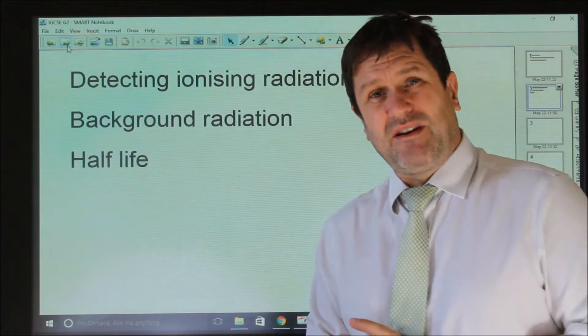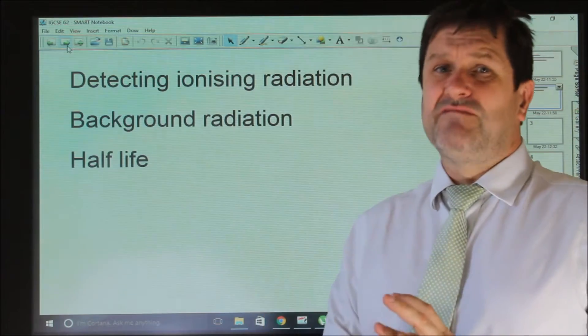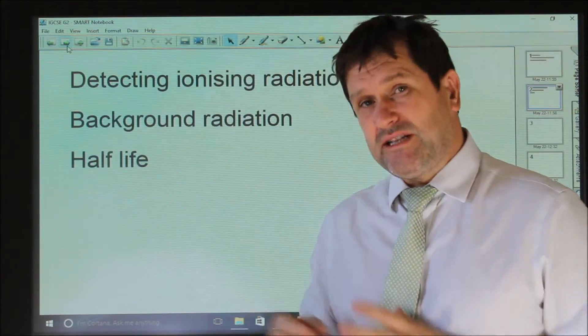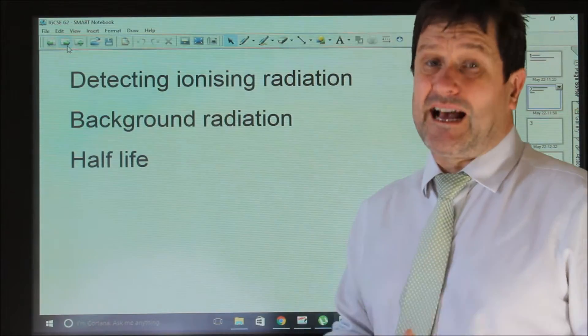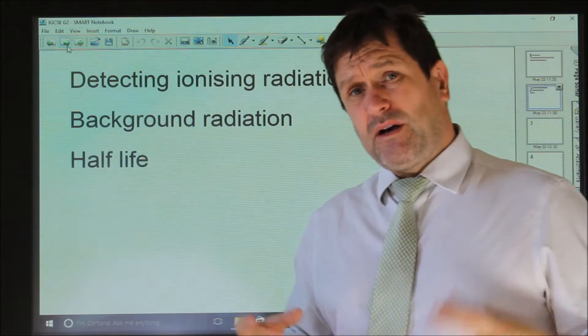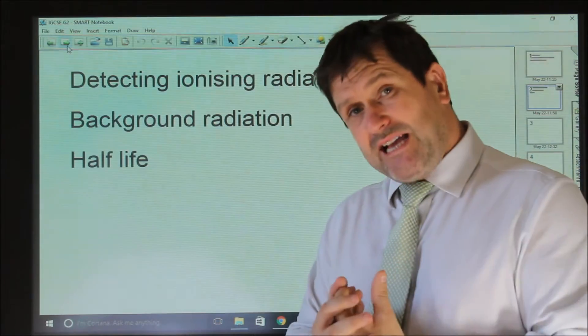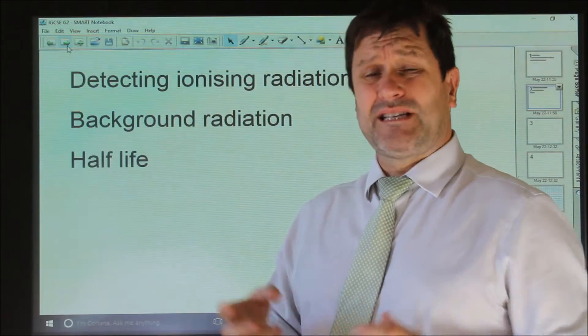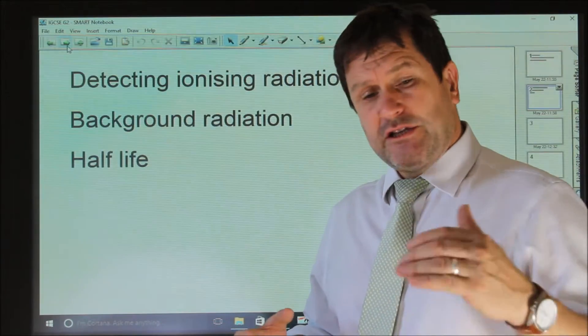A Geiger-Muller tube has on the front of it a very thin sheet of mica. As the particle, the radiation, penetrates that, inside there is a gas. When the gas, when the alpha particle, the beta particle, the gamma collides with the gas inside the Geiger-Muller tube, it ionizes the gas.